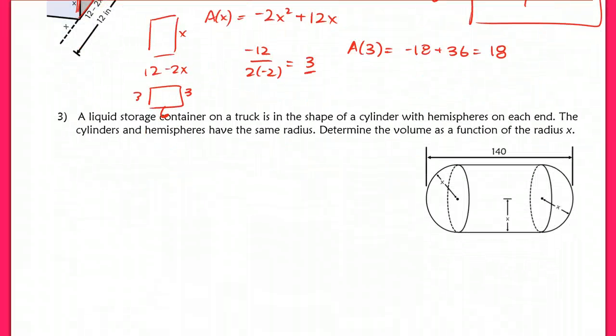Now in question 3, you have a liquid storage container on a truck is in the shape of a cylinder with hemispheres on each end. The cylinders and hemispheres have the same radius. We're going to determine the volume as a function of the radius. Notice that they didn't actually tell us in the problem any constraint, they just drew a diagram for us. So we have a constraint here, which we're going to talk about in a second, but they didn't tell us explicitly what it was, they just provided a picture for us. I would like to start with our constraint here. Since we have this 140, the total length here, I know that this segment here is also x, and this segment here is x as well. And although I don't know what the height of the overall cylinder is, I'm just going to call that h. So I know that x + x, so 2x + h should equal 140. So there's my constraint using the picture.